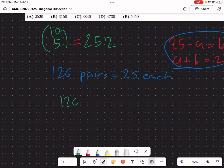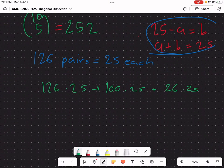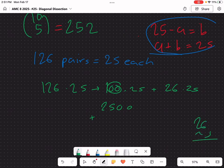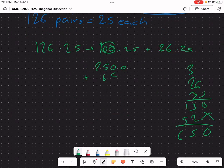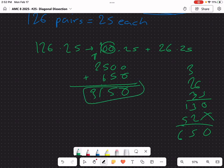So 126 times 25. And then quick mental math, we can do this as 100 times 25 plus 26 times 25. So what's 100 times 25? That's 2500, right, the two zeros. Plus 26 times 25, we can just compute that, 650. So 2500 plus 650, that is just 3150.